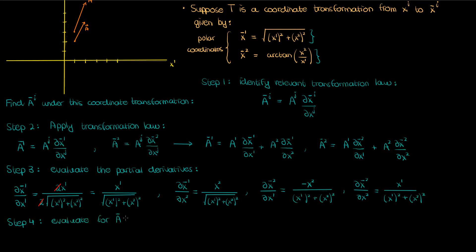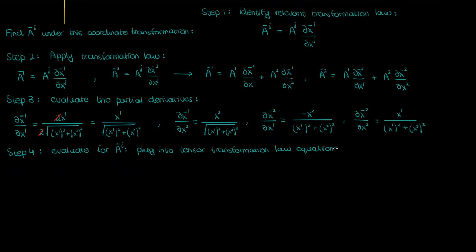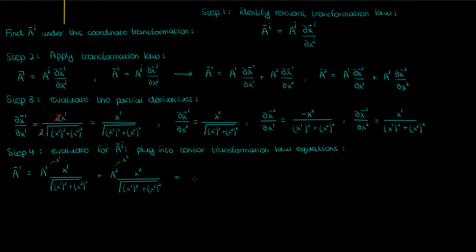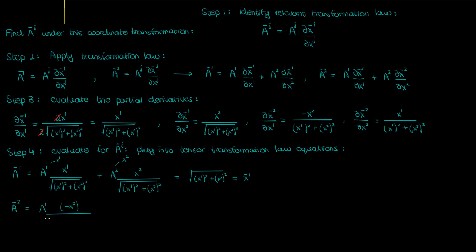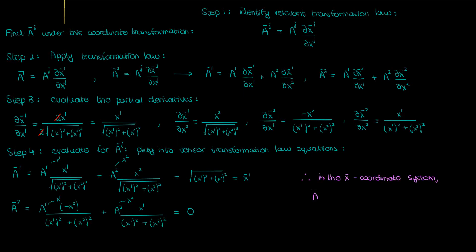The next thing we'll do is plug the partial derivatives into our tensor transformation laws to find the transformed components of tensor A. If we do that, this is what we get for the first transformed component. We can now substitute our untransformed vector components: A super 1 is x super 1 and A super 2 is x super 2. When we plug those into our equation for A super 1 bar, we find that A super 1 bar is just the square root of x super 1 squared plus x super 2 squared, which is the exact same as x super 1 bar. Meanwhile, when we use the equation for A super 2 bar and substitute our components, we find that because the numerators add up to 0, the transformed component A super 2 bar is 0. So our transformed contravariant vector has components x super 1 bar for the first component and 0 for the second.